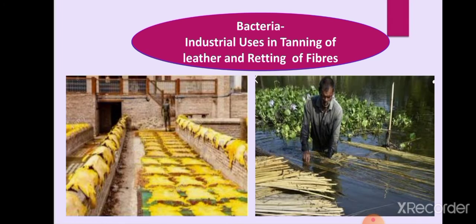Bacteria are used in industrial applications such as the tanning of leather and retting of fibers. In the leather industry, bacteria are used to tan the hide or skin of animals to make leather soft. In the jute industry, bacteria are used for retting — jute plants are tied in bundles and submerged in water, and bacteria gradually destroy the stem tissue and loosen the fiber. Jute fibers are used in making jute bags, ropes, and linen.